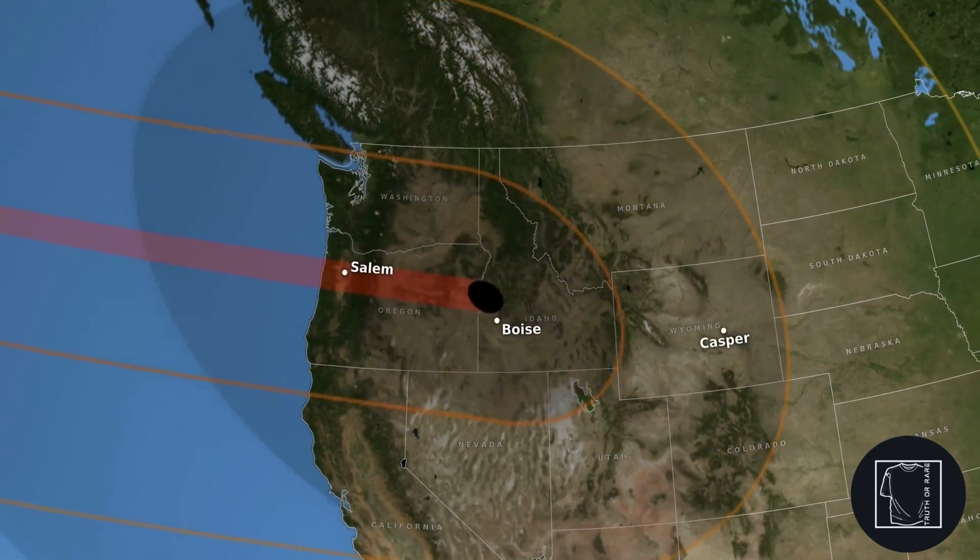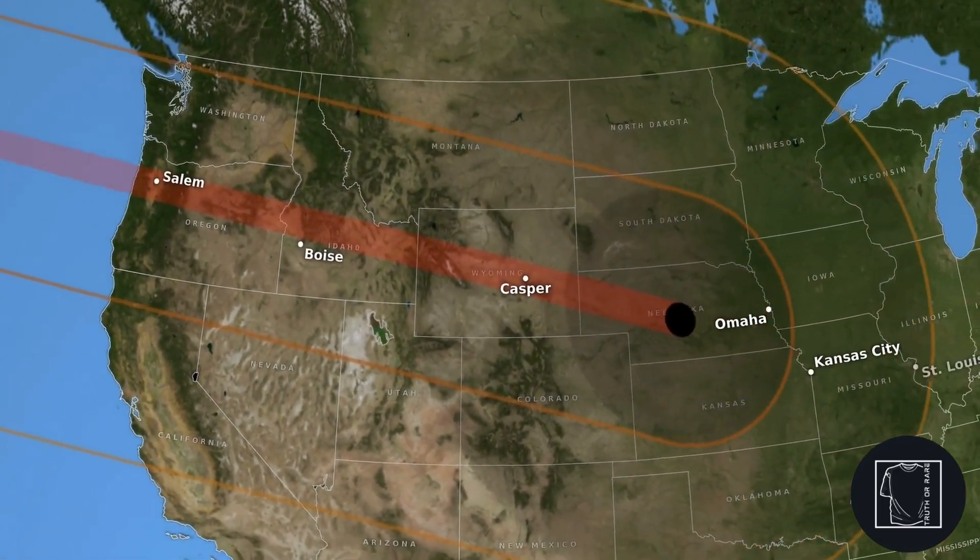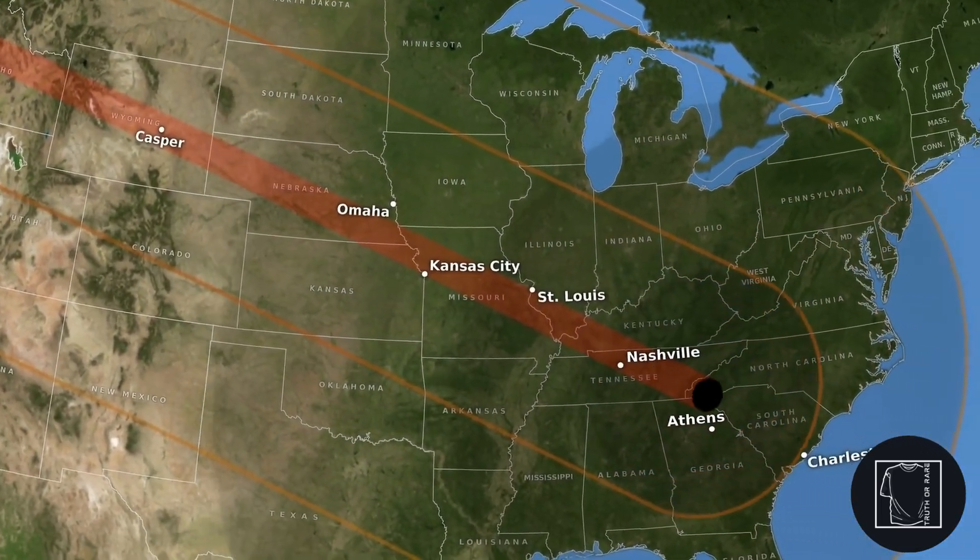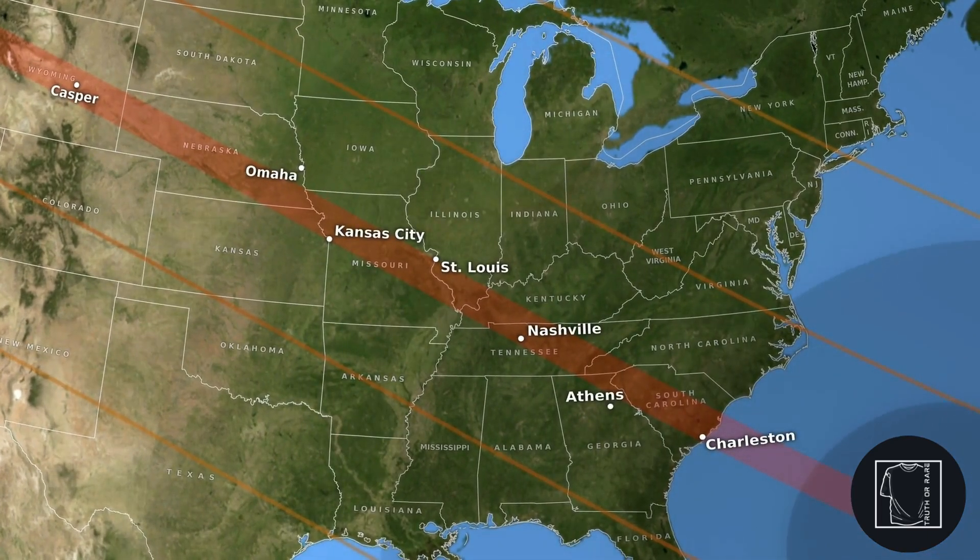So if you find your area in the path of totality one year, you've hit the jackpot, because on average, that same spot on Earth will only get to see a solar eclipse every 375 years.